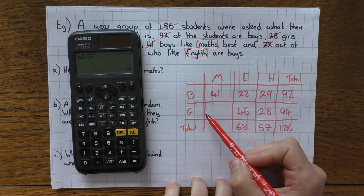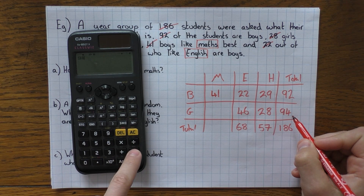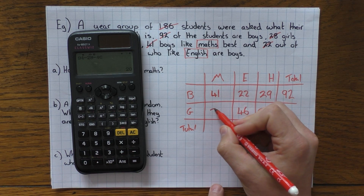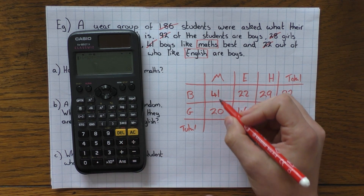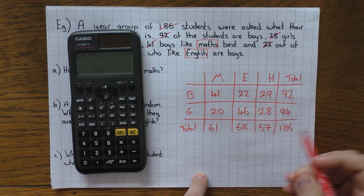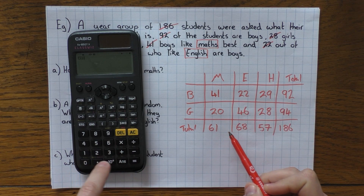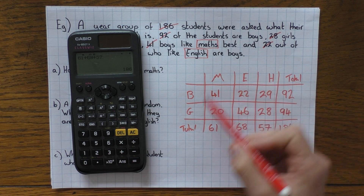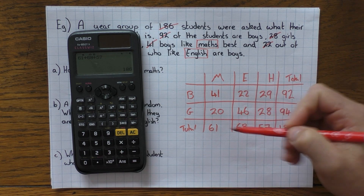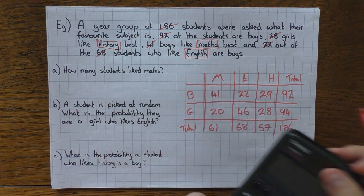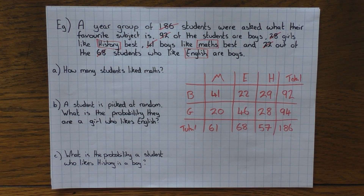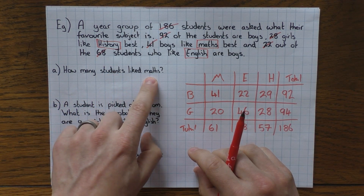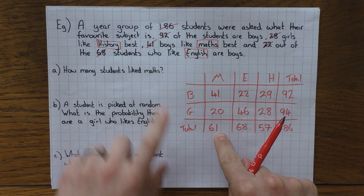Girls who like maths: 94 minus 28 minus 46 equals 20. Then the maths total is 41 plus 20, which is 61. Let's check: 61 plus 68 plus 57 equals 186 — correct. The table is now complete. To answer part (a), how many students liked maths — I look at the maths total and it's 61.